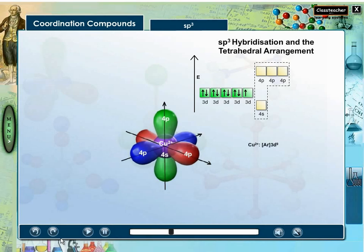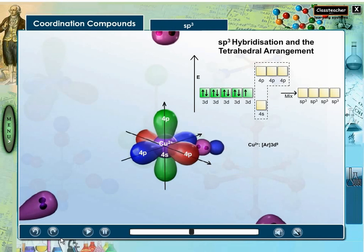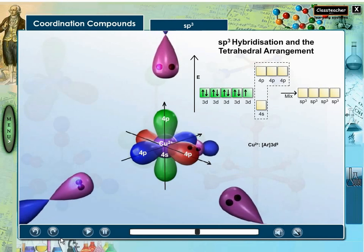In this complex, copper is in plus-2 oxidation state and its four sp3 hybrid orbitals point towards the four corners of the tetrahedron.